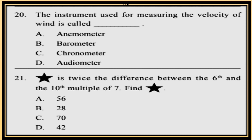Question 21. Star is twice the difference between the 6th and the 10th multiple of 7. Find star. First find the 6th and 10th multiples of 7, find the difference, then multiply by 2 to get the answer.